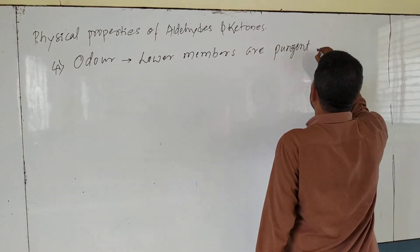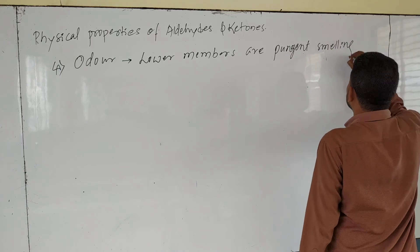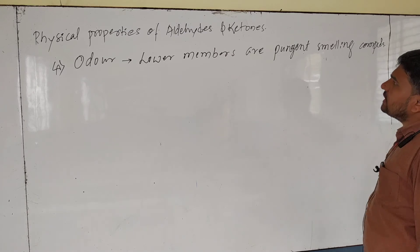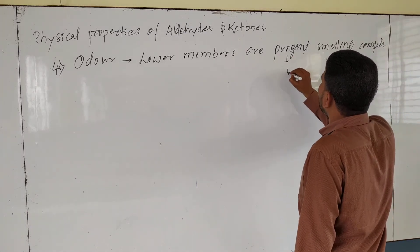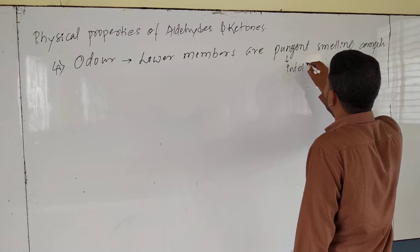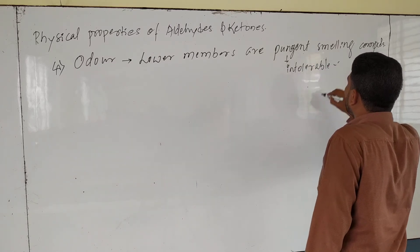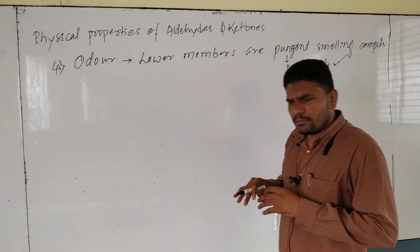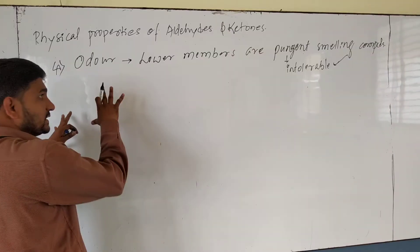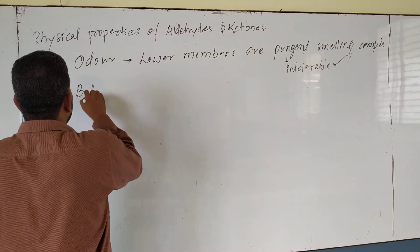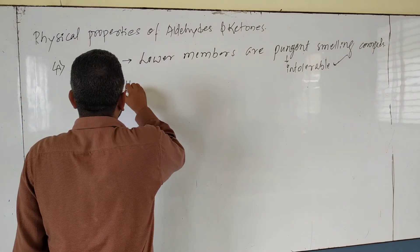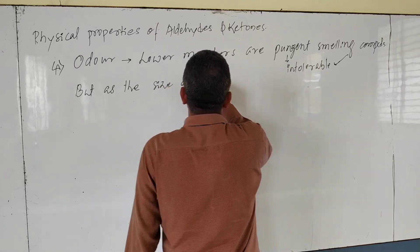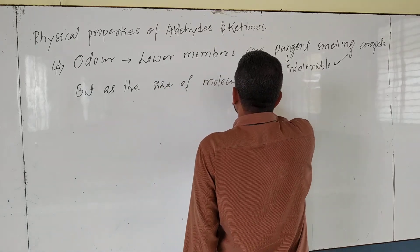The fourth physical property is regarding their odor. Lower members are pungent-smelling compounds — pungent means the smell is intolerable. You cannot tolerate that smell. That applies to lower members, but as the size of the molecule increases...